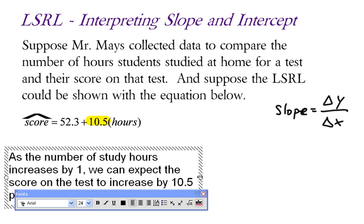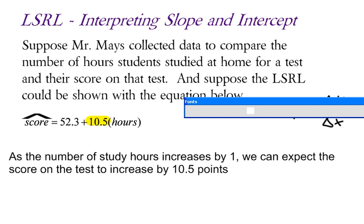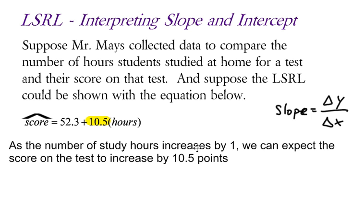Now, notice that I'm using complete sentences. Notice that I'm using context in this problem. Some key words that need to be in here would be study hours, because that is my explanatory variable. So you need to have the variables in your interpretation of the slope.